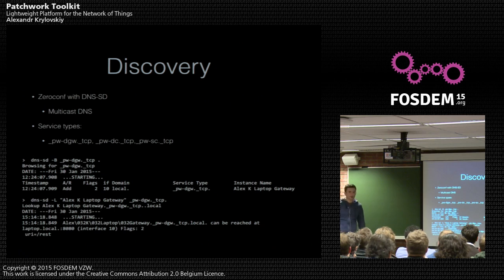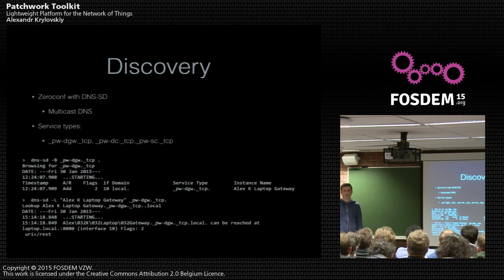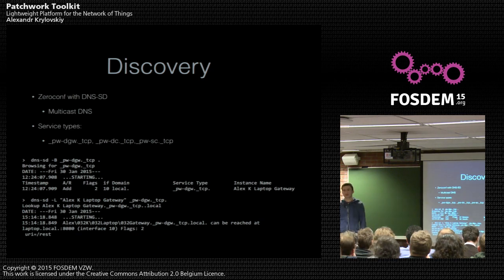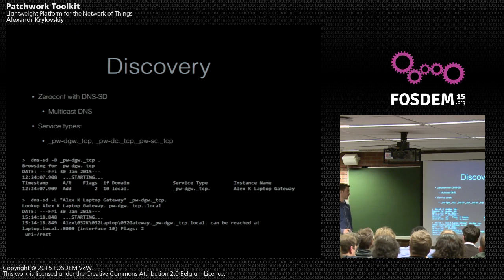Discovery is another interesting part. When you hack things together locally, you probably hard-code the endpoints, which is fine, but if you go to another network everything changes and nothing works. There are protocols for this — DNS-SD, which is multicast DNS. If you're on a network that supports multicasts and you have a DNS-SD client, you can discover that there is a Patchwork gateway running on the network. You can then get to the device catalog absolutely automatically. From that point, you have the device catalog and can start discovering devices and communicating with them.